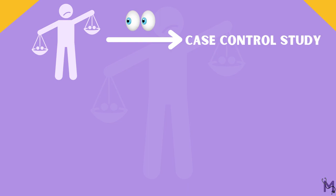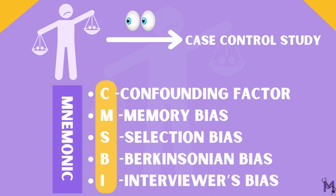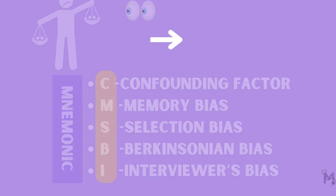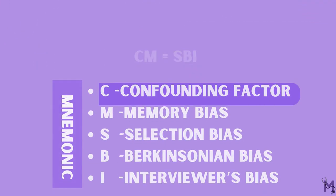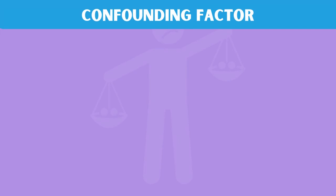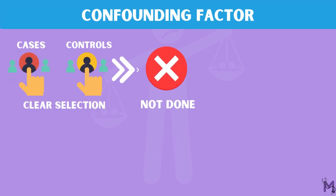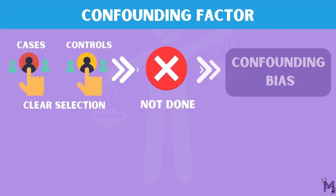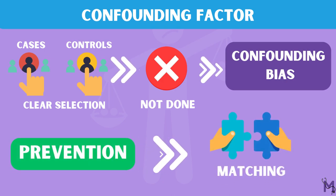To remember the five biases, remember the mnemonic CM equals SDI. The C stands for confounding factor. If a clear selection of cases and controls isn't done properly, a confounding bias may take place. To prevent this, matching can be done in case-control studies.